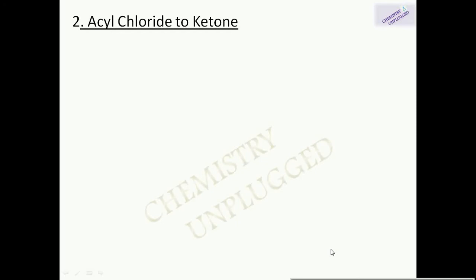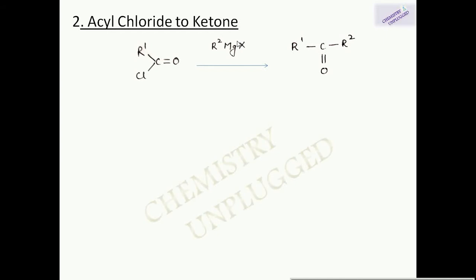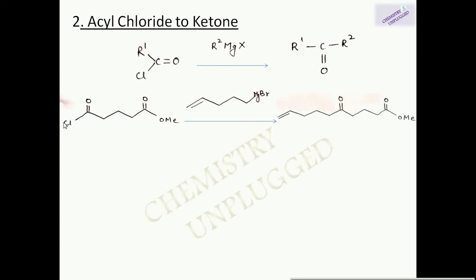Synthetic application 2: acyl chlorides can be converted into ketones. The halide is replaced by the carbanion from the Grignard reagent, and MgXCl is removed as a byproduct, giving a ketone. In another example, the carbon ion group attaches and the Cl is removed from the reaction to form the ketone product.